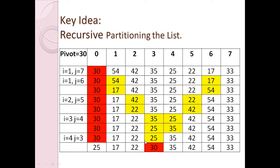Moving ahead, i equals four finds an element greater than the pivot, and j equals three finds an element less than the pivot. Now i is greater than j, which means they have crossed each other. When i crosses j, we do not swap i and j. Instead, we swap the j-th element with the pivot element. So the pivot comes to position j equals three.